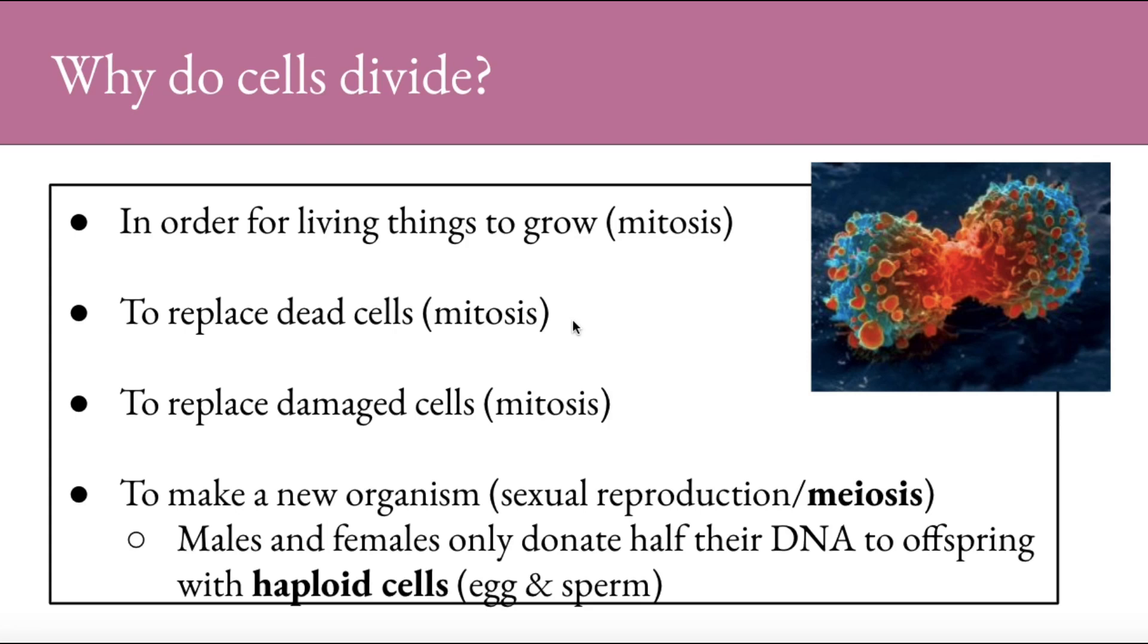When cells have a complete set of chromosomes, they are called diploid cells. All human cells are diploid unless they are a sperm or an egg. In a human cell, the complete set is 23 pairs for a total of 46 chromosomes. So normal cells have 46 chromosomes, 23 pairs.